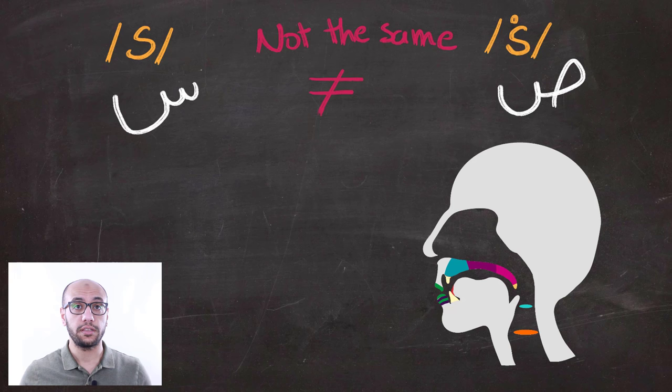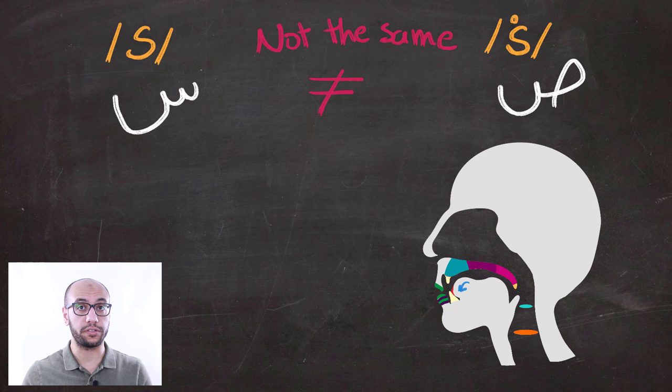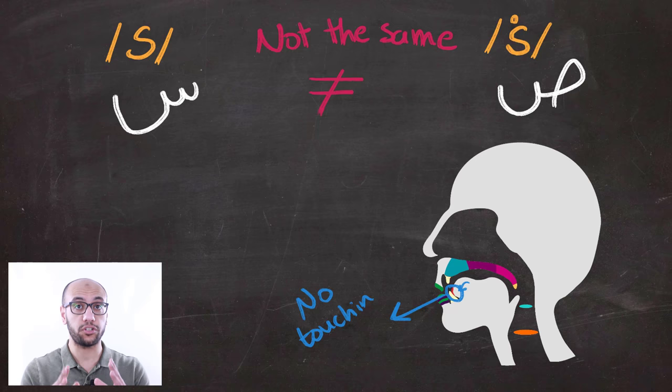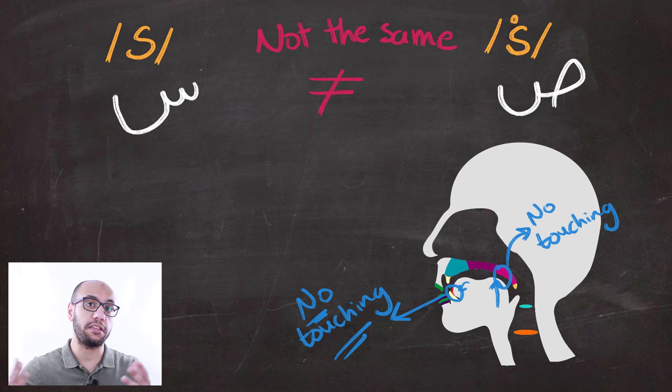As for the Saad sound, the tip of the tongue is moving downwards behind the lower front teeth. Remember, without touching the lower front teeth. The back end of the tongue is raised but not touching anything either.